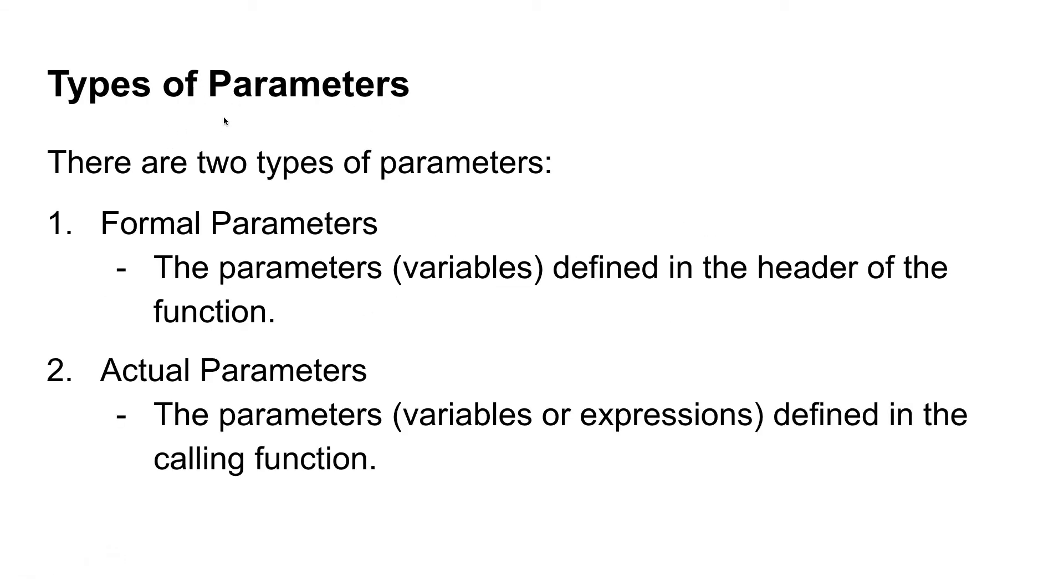So there are two types of parameters. There is formal parameters and there is actual parameters. The formal parameters are going to be the parameters or variables defined in the header of the function. And the actual parameters are going to be the parameters, those can be variables or expressions, that are defined in the calling function.